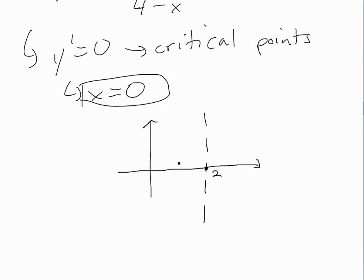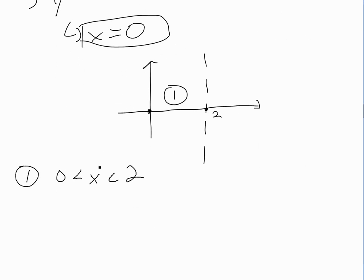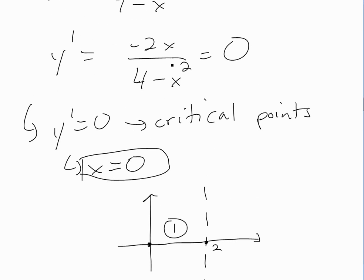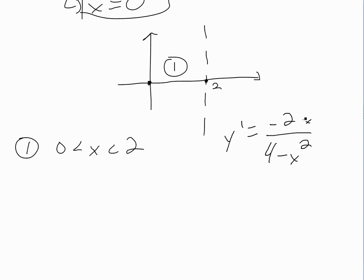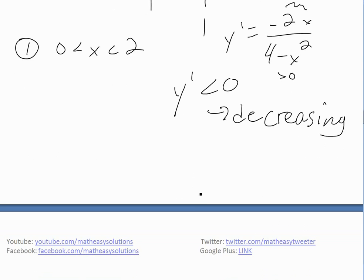Looking at the interval where x is greater than 0 and less than 2: if we put in a number like x equals 1, the numerator negative 2x is negative, and the denominator 4 - x² is positive (since x² is less than 4). So y' is negative divided by positive, which is negative. Therefore y' is less than zero and the function is decreasing on (0, 2). That's the only interval we needed to check.